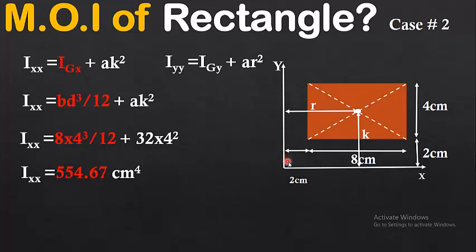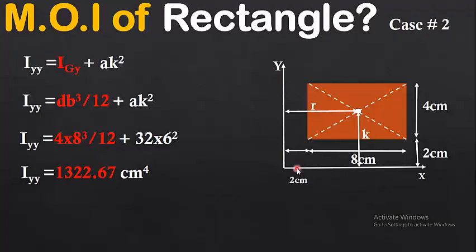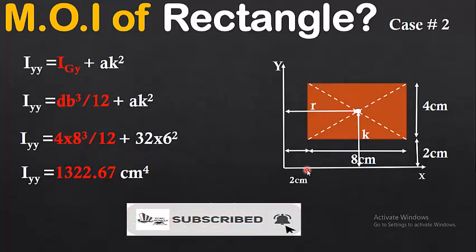You can see the difference between taking the axis adjacent to the figure versus taking the reference axis apart from the figure. Similarly, Iyy = Igy + Ar² = db³/12 + Ar², and substituting the values gives the moment of inertia about the y-axis for case two. That's all for today — I hope you understand how to find the moment of inertia of a rectangular section. If you're new to the channel, please subscribe and press the bell icon for video updates.